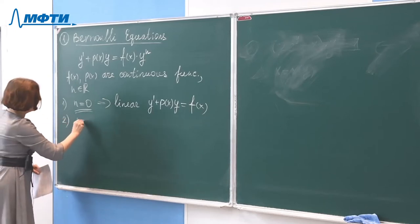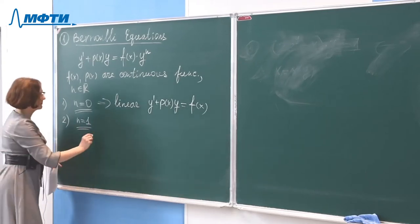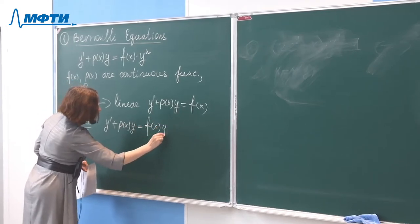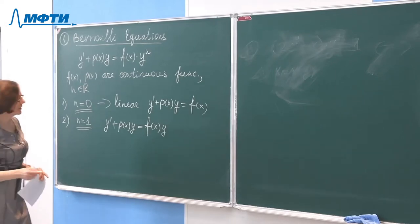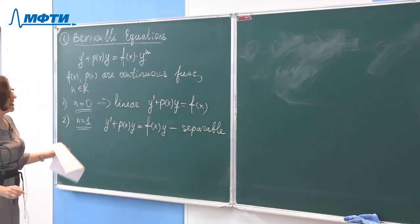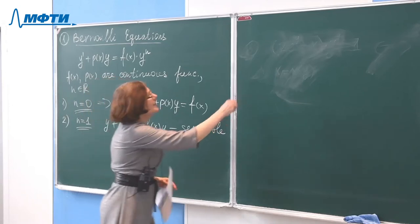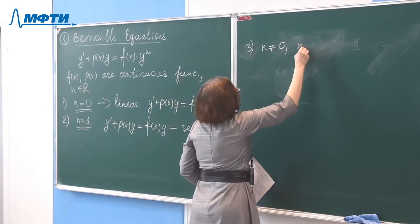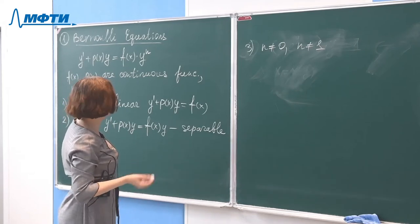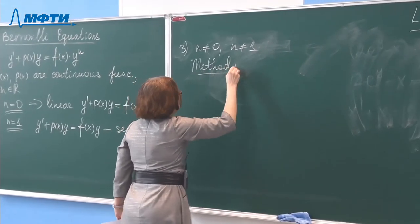We are interested in the case when N is not zero and not one. The method is to make a substitution: Z equals Y raised to the power N minus one. Then Z-prime equals (1 minus N) times Y to the power (minus N) times Y-prime.